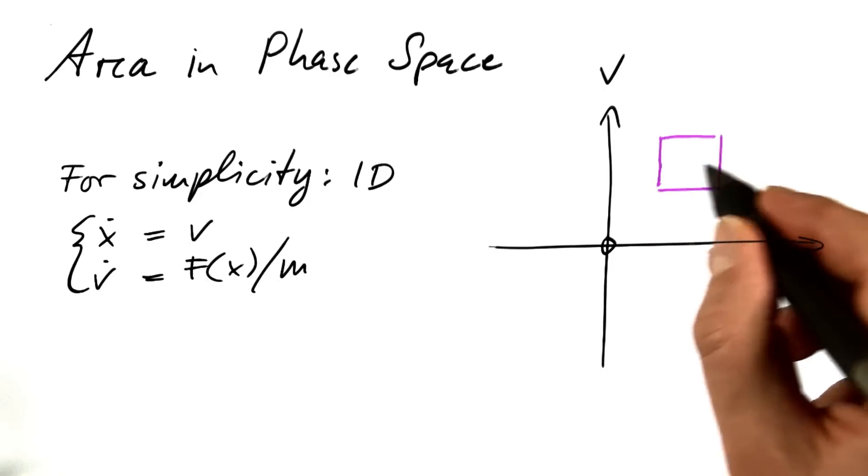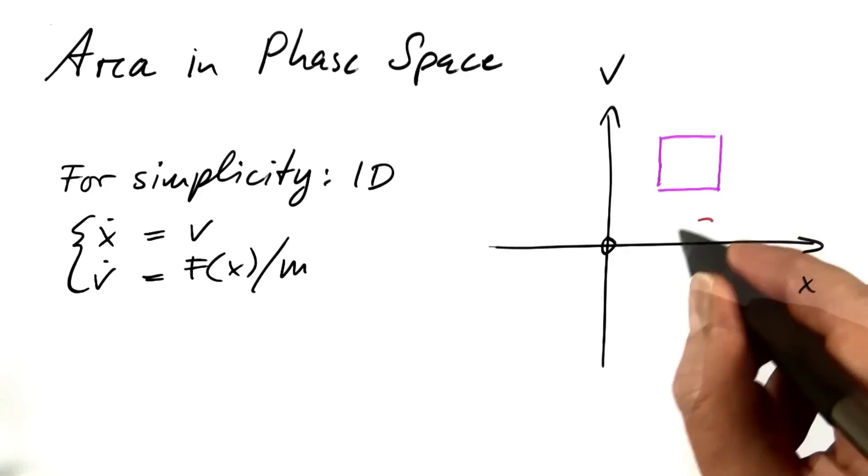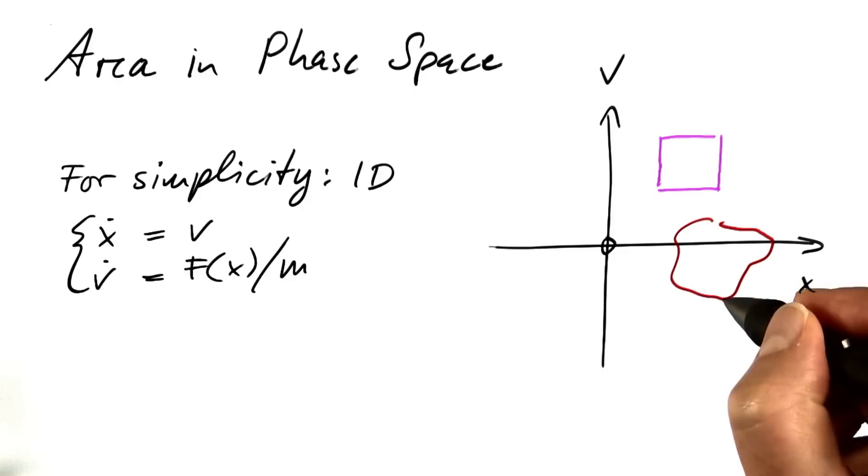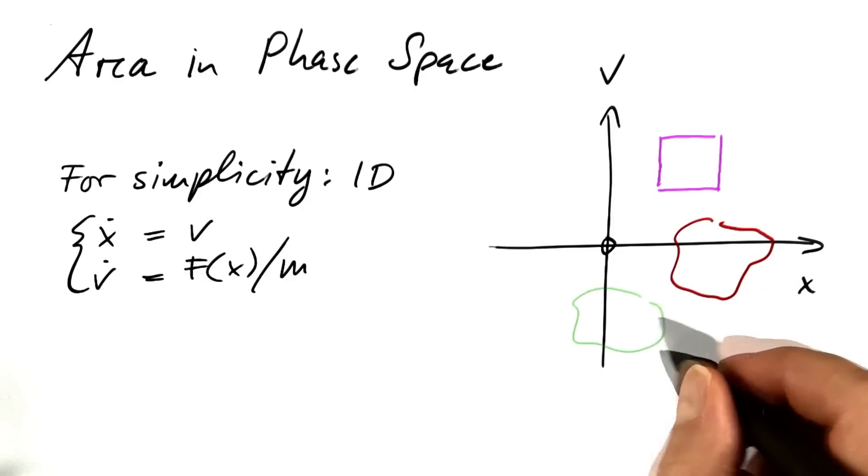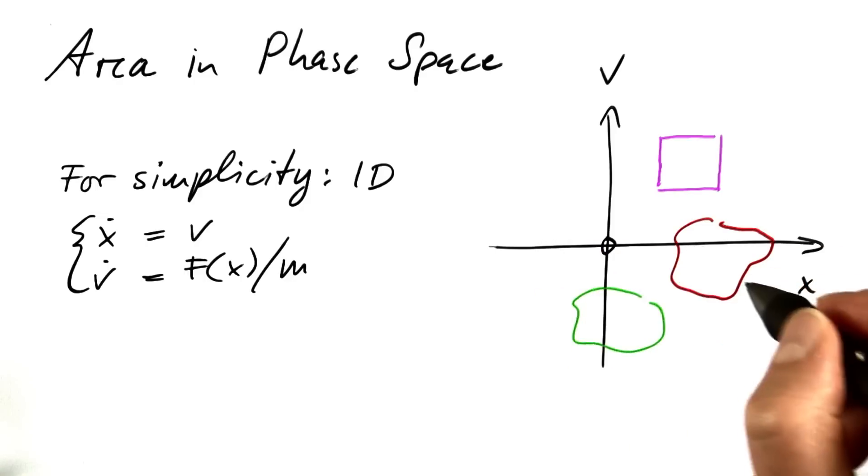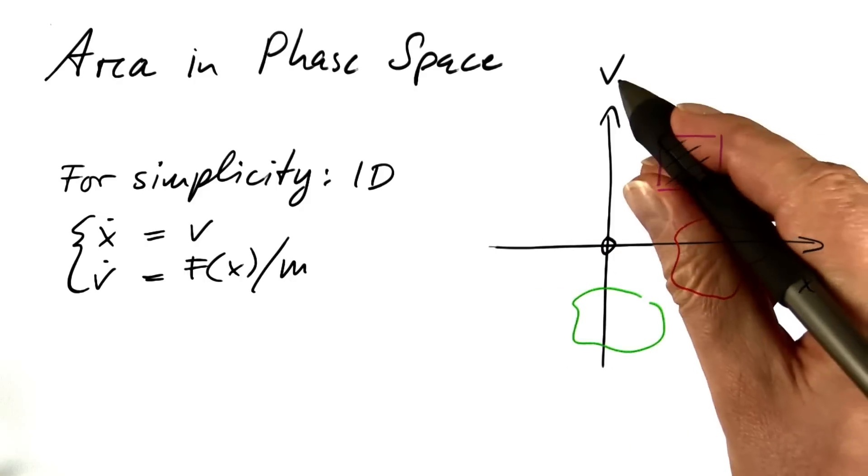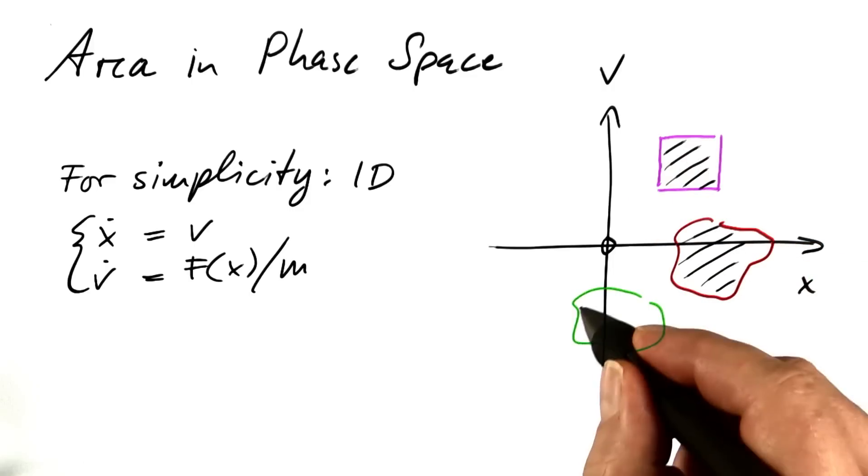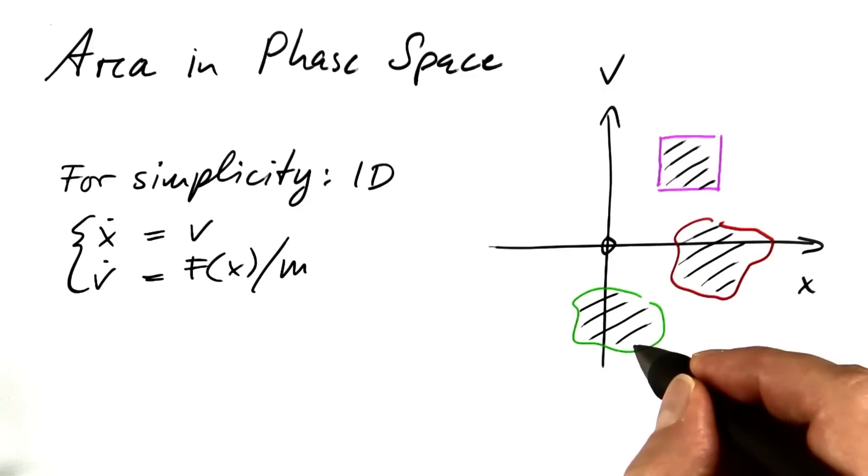This set of initial conditions will, after, say, one second, end up here, and after another second, maybe end up here, and so on and so on. An area in phase space remains constant. That's called Liouville's theorem.